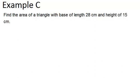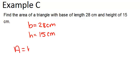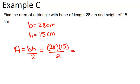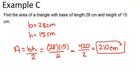In example C, it says find the area of a triangle with base of length 28 centimeters and height of 15 centimeters. So those are the two pieces of information we need to know to find the area of a triangle. Remember that area is base times height divided by 2 for triangles. So in this case, we'll plug in our information, 28 times 15 divided by 2, which is 420 divided by 2, or 210. And our units will be centimeters squared. So the area equals 210 centimeters squared.